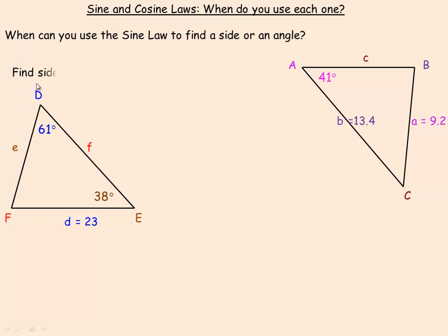In this diagram on the left, we're asked to find side e. If I'm finding side e, I'd have to write out my sine law with side e in it. Remember, angles are normally uppercase letters and the sides opposite are the lowercase versions — so angle E, side e, angle F, side f, etc.